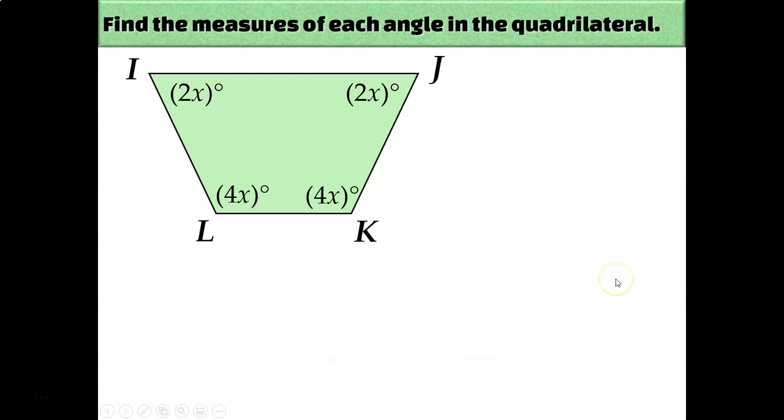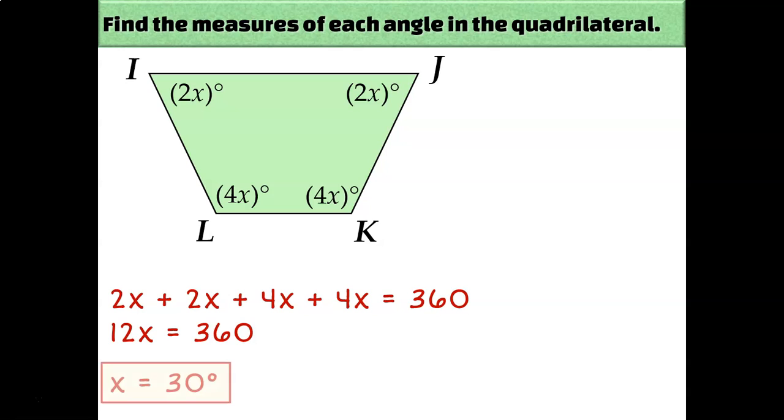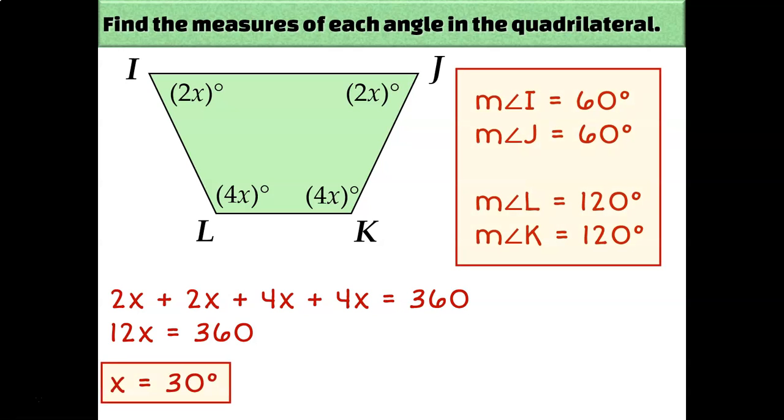Same idea on this next one, just a little bit easier because it's just 2x plus 2x plus 4x plus 4x, so 12x equals 360, so x equals 30. Which means that angle I and angle J are both 60 degrees, and angle L and angle K are both 120 degrees. We'll actually learn later in this unit that that makes that an isosceles trapezoid.